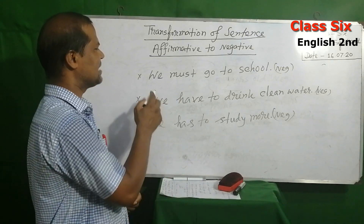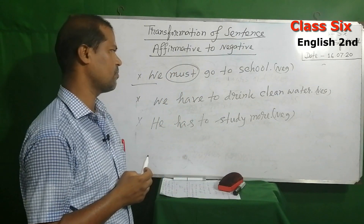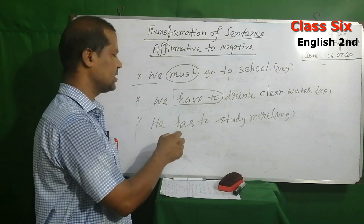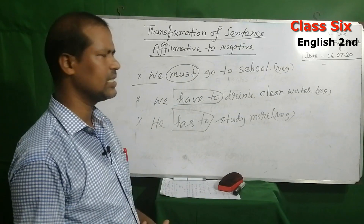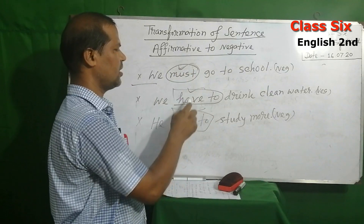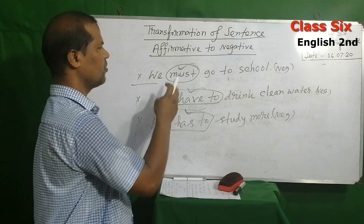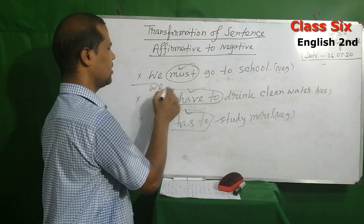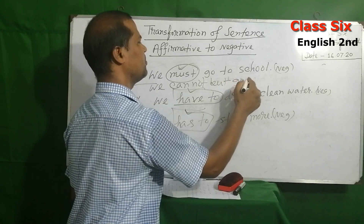Now here are three sentences using modal verbs. The first uses 'must,' the second uses 'have to,' and the third uses 'has to.' When you see 'must,' 'have to,' or 'has to' in a sentence, to make it negative you have to replace it with 'cannot but,' and the next part remains the same.